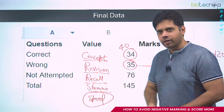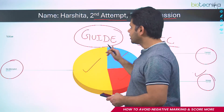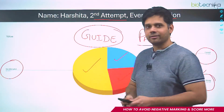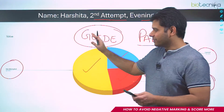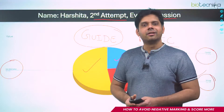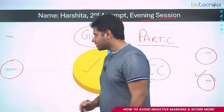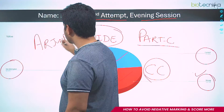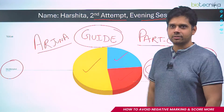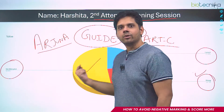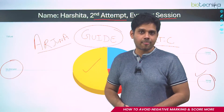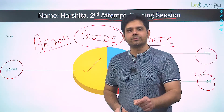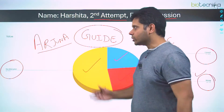That's what I wanted to share today. Harshita has already joined the Arjuna batch — she gave permission to share her data, though the name is changed. My point is not just to say join Arjuna batch — if our analysis and reputation feel right to you, join us; otherwise join whoever you feel is good. But no one in the market can give you in-depth analysis like this. We already have your data, and we sit with you, analyze your mistakes, and guide you in the minutest detail.